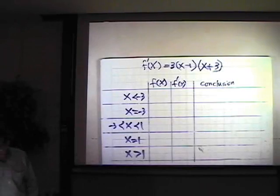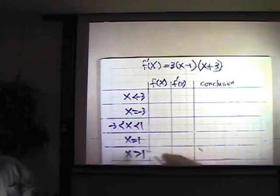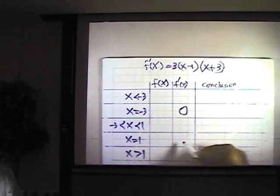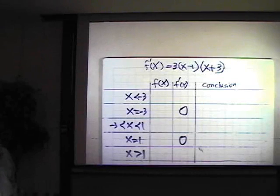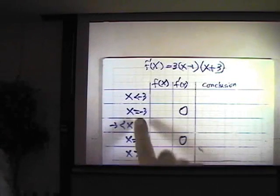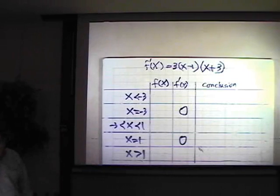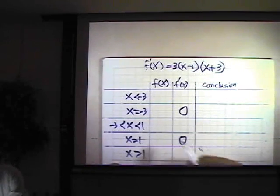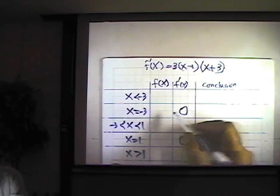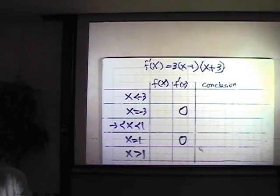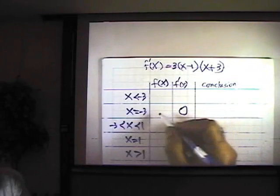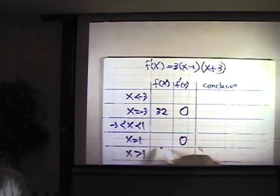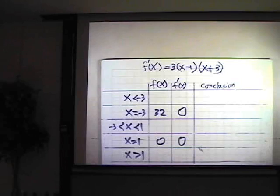First of all, we got these critical points by setting f prime of x equals 0. We know these are already 0. I like to find the function values at these critical points, so it will help us sketch the graph. f of negative 3 equals 32, and f of 1 equals 0. So we put the 32 here, and 0 here, we have two points already on the graph.